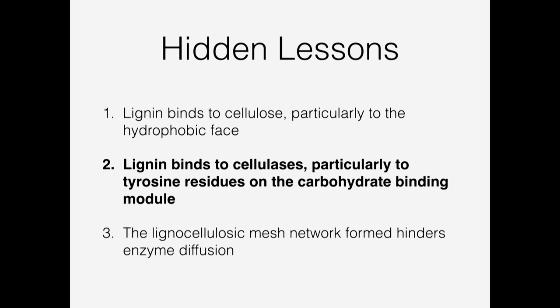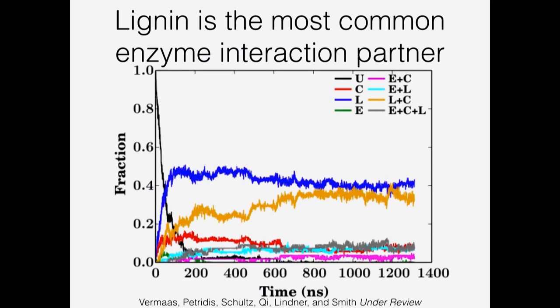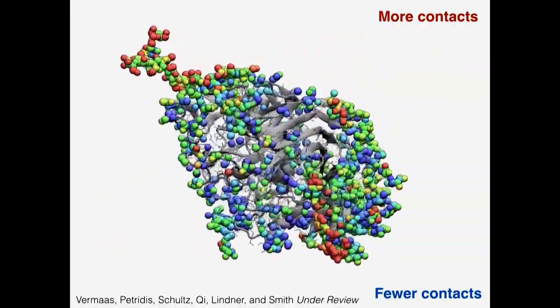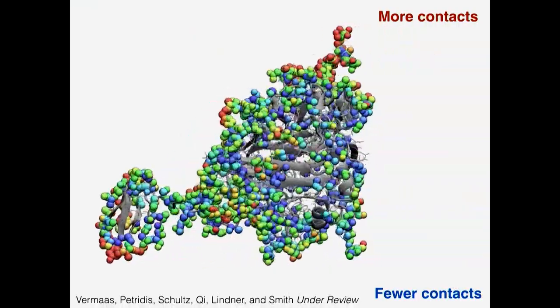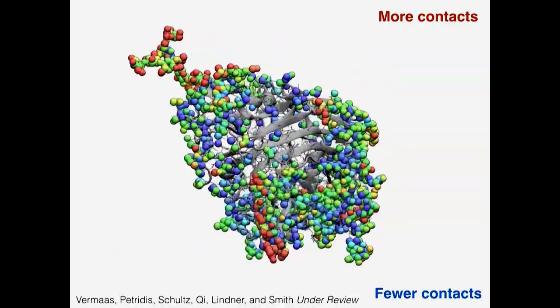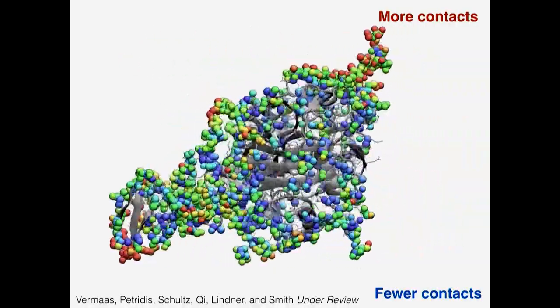The second lesson is that lignin binds to cellulases, particularly to tyrosine residues on the carbohydrate binding module. We show this by tracking what each enzyme is binding to over the course of the simulation. Initially all are unbound, but over time they bind to cellulose, lignin, enzyme, or some combination. The dominant populations are lignin or lignin-and-cellulose — 80% of all enzymes in the simulation bind to either lignin or lignin and cellulose. Visualizing the heavy atoms of the enzyme colored by contact frequency with lignin reveals two high-contact areas: glycosylations and tyrosine residues.